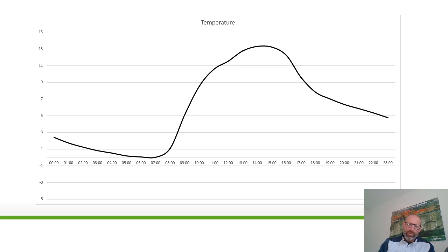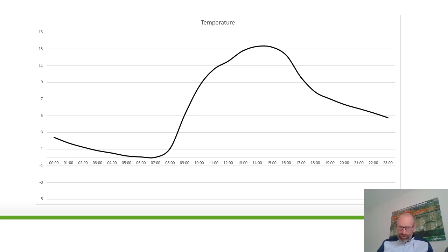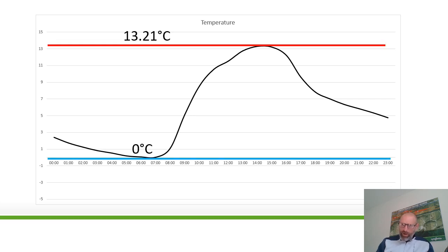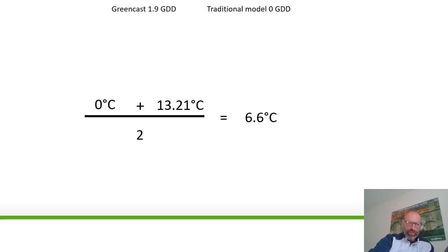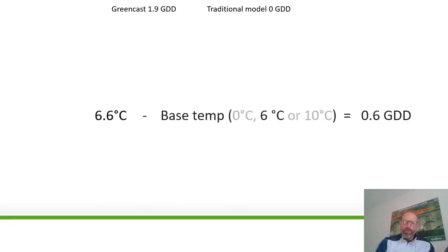What we have here is a fairly extreme day temperature-wise. Looking at temperatures throughout the day — starting early on around 2 degrees, dropping to around freezing at 7 o'clock in the morning, but by 2 o'clock in the afternoon we're up to 13 degrees. The reason I've pulled this one out is it explains quite well how our model works. We use the traditional growth degree day calculator, but there's a slight variation. The traditional model takes that minimum temperature of 0 and maximum of 13, giving an average of 6.6, then subtracts the base temperature of 6, giving 0.6 growth degree days — that's how the standard equation works.